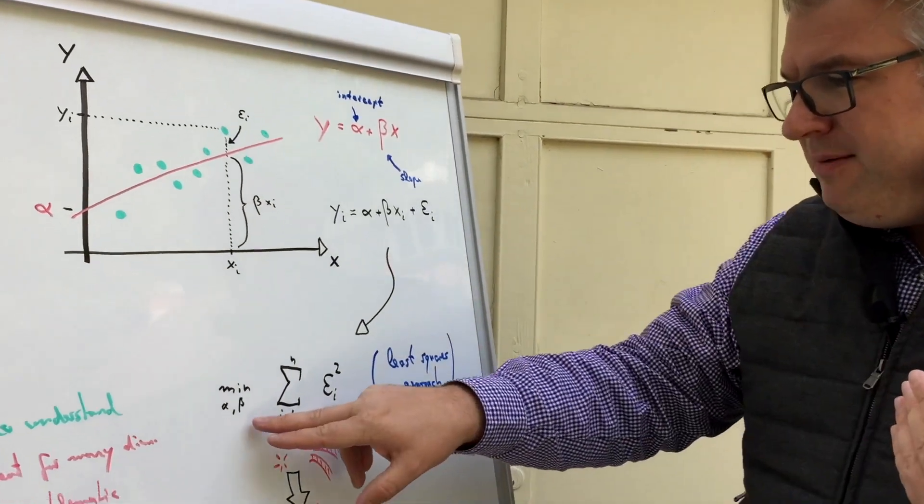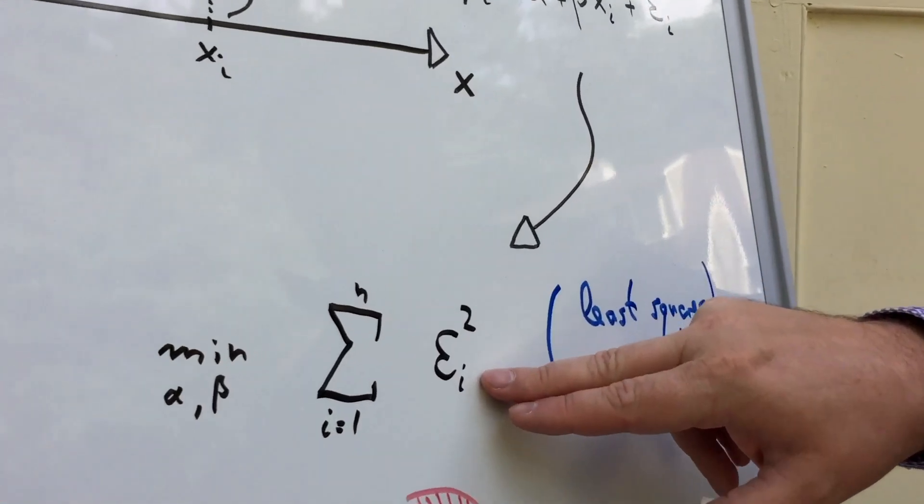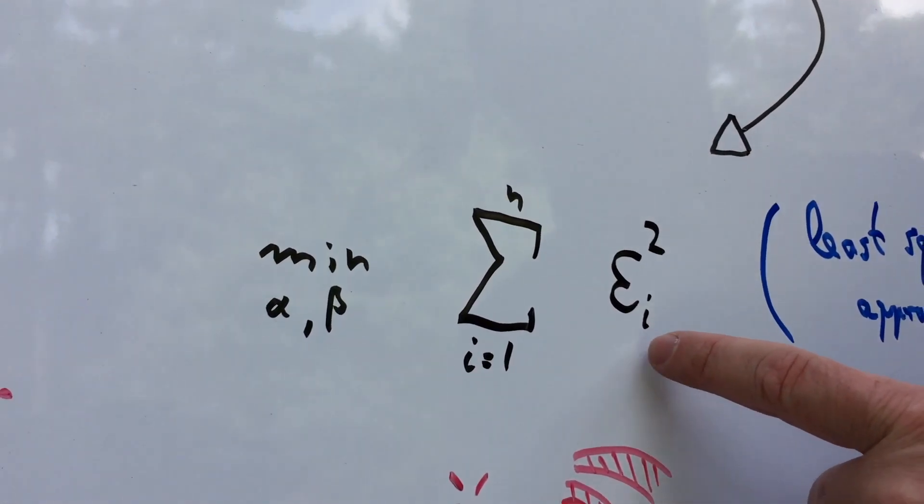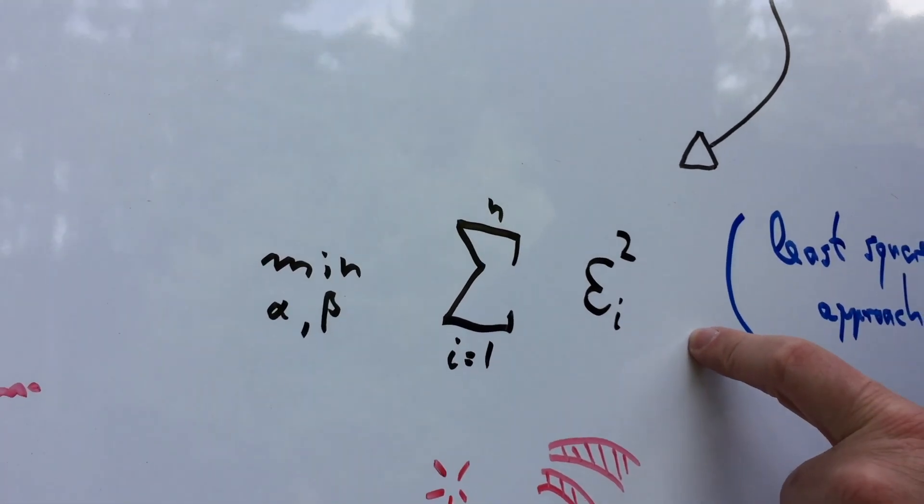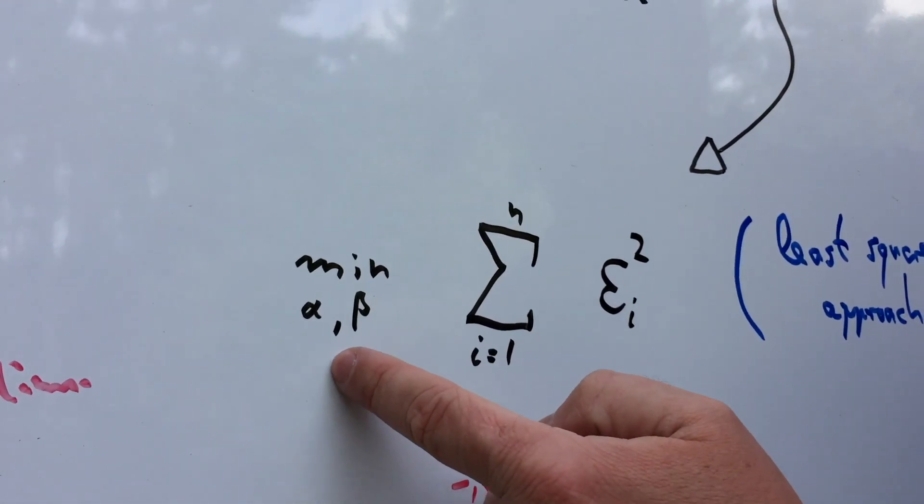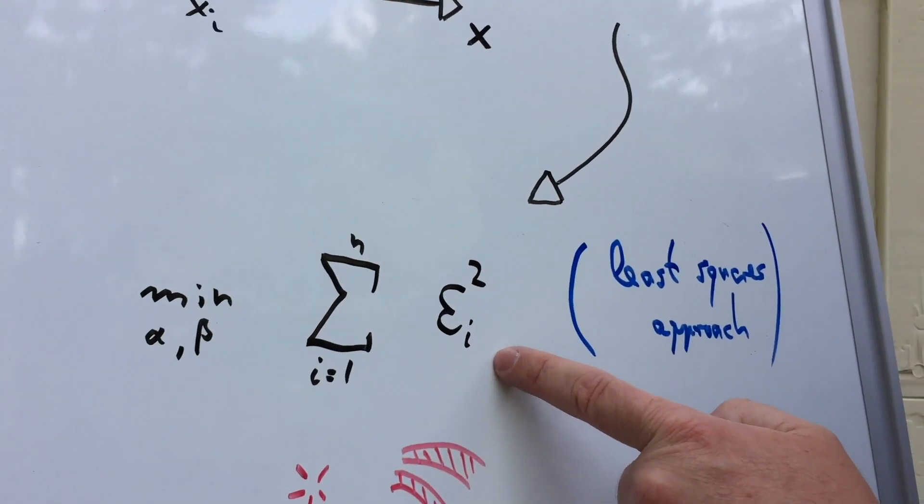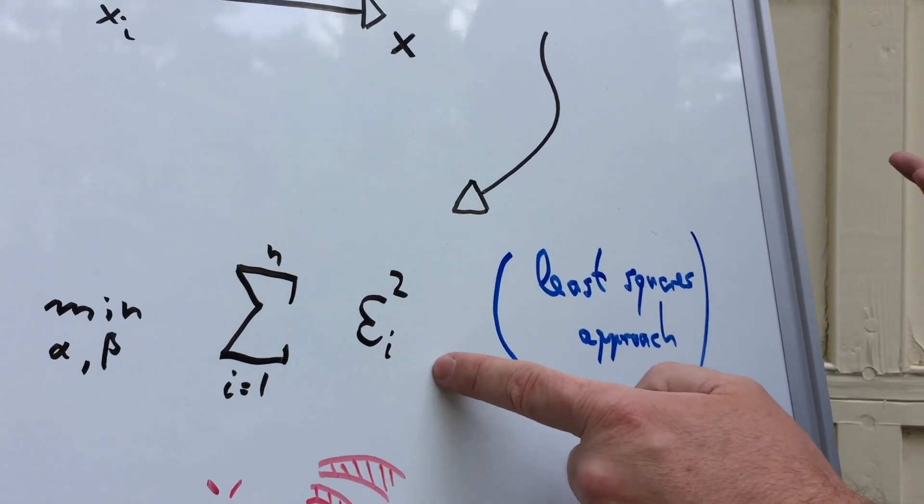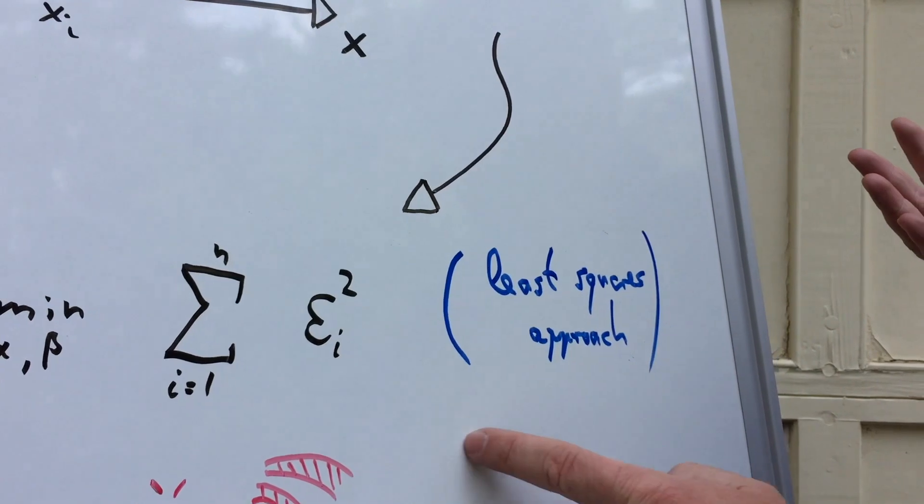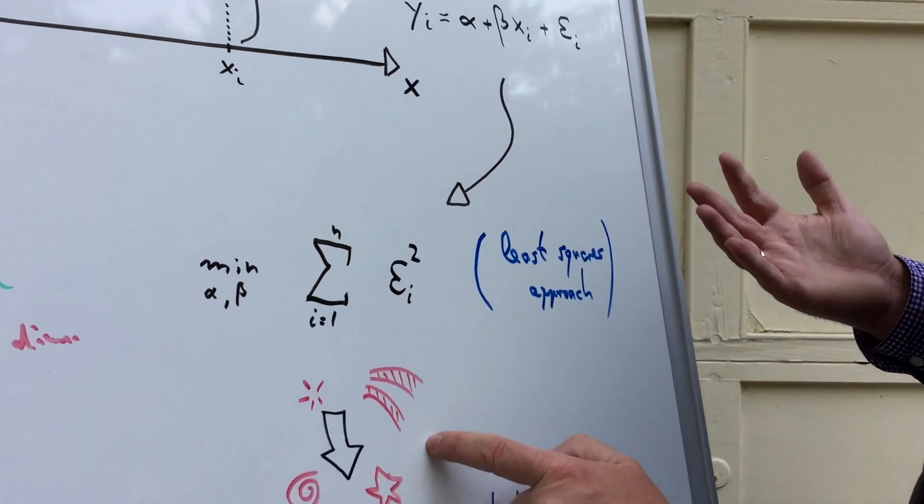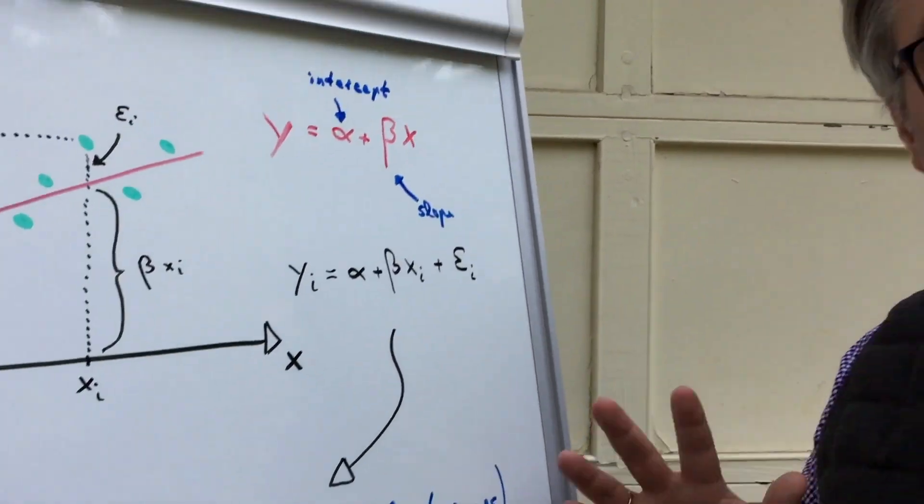Well, instead of just minimizing the sum of the epsilon i, we can also minimize the sum of the squares. So the only thing we can change are the alphas and betas. So this is basically what we can play with. And then for all our existing training data points, we want to minimize the sum of the squared errors. This whole idea is by the way called the least squares approach.